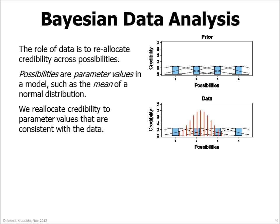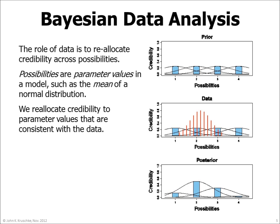Then we collect some data, which are denoted by the red histogram here. Notice that the data appear to be most consistent with the second mean, somewhat consistent with the third mean, and only slightly consistent with the other means. Bayes' rule merely provides the mathematically correct reallocation of credibility across the candidate parameter values, as shown in the bottom panel. The result reveals how strongly we should believe in each candidate parameter value given the data.